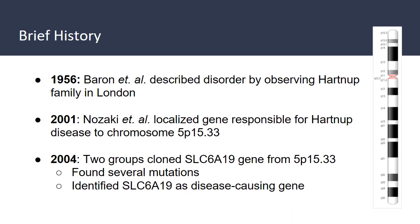I wanted to start with a brief history of Hartnup disease. In 1956, Baron et al. described this disorder by observing the Hartnup family in London, noting photosensitivity and pellagra with no known cause. In 2001, Nozaki et al. localized the gene responsible to chromosome 5p15.33. In 2004, two groups cloned the gene from that chromosomal region, finding 17 mutations at the time — now up to 23 are known — and ultimately the SLC6A19 gene was identified as the disease-causing gene.